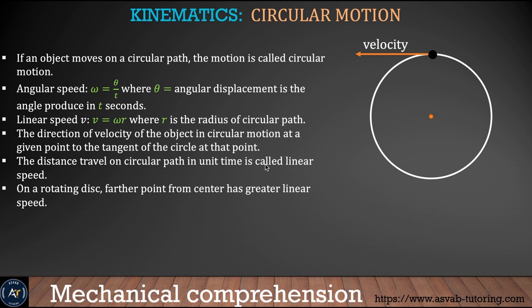The next thing we'll learn is circular motion. If an object moves on a circular path, the motion is called circular motion. Say you are spinning a rock around your head with a rope and you suddenly snap the line — the stone will go in the direction perpendicular to the rope, which is the tangent. There is a relationship between angular velocity and linear velocity called V = ωR, where R is the radius and ω is the angular velocity.